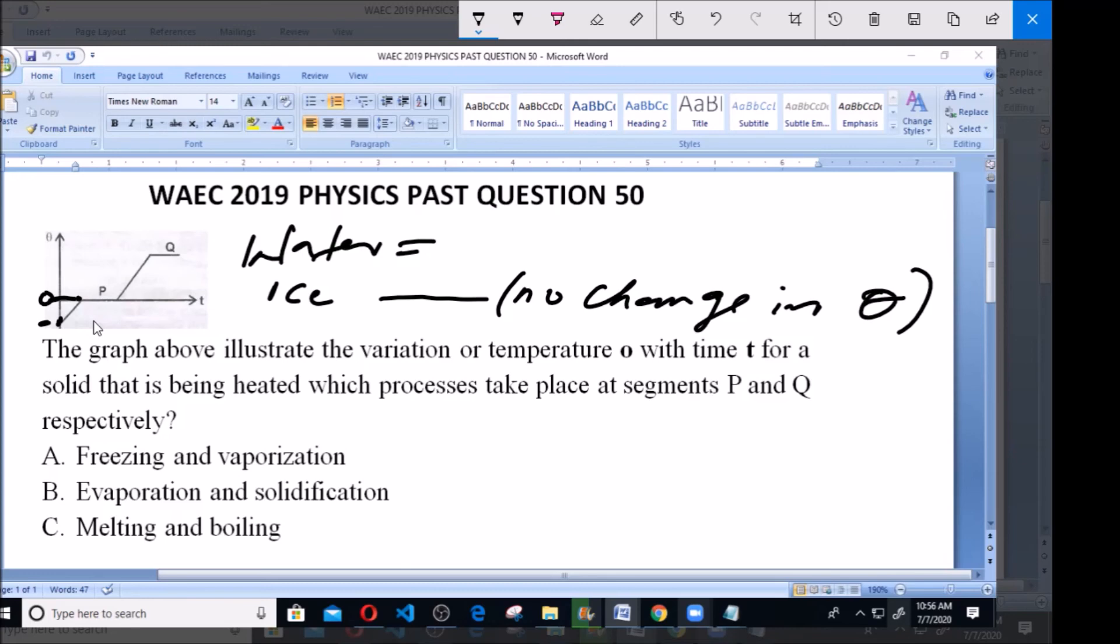Now according to this particular question, the answer is C: melting and boiling. Melting and boiling—that is P and Q respectively. So our answer is C. Thank you and God bless you.